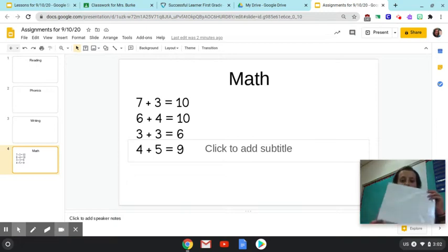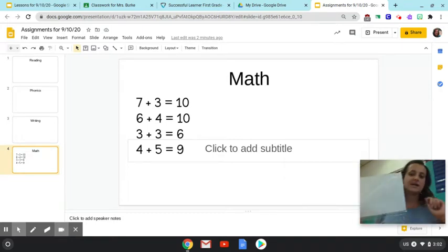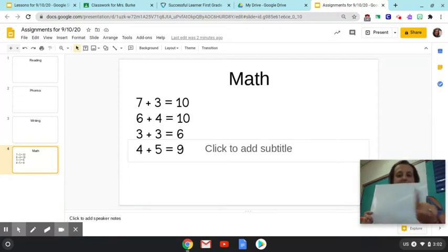For example, today for math, we worked on number bonds and pictures. So for these problems, I'll go ahead and give you the example right now so you can see how to insert and also how to complete the math assignment. So with your dry erase board, you're going to write the fact at the top of the paper. Seven plus three equals 10.